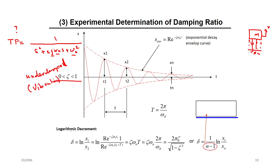Then we can use a very special math function or equation called the logarithmic decrement. From the decaying exponential, there is a very special function we call log decrement. I'm going to call it delta. Delta is ln(x1/x2), where x1 is the first peak and x2 is the second peak. If you take ln(x1/x2), it will be a constant — we call it delta. This delta is constant; it's not going to change. If you take ln(x1/xn) and divide by the number of periods, it will always be the same also.